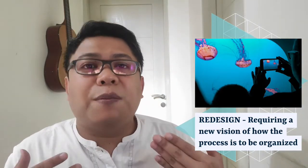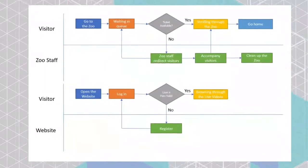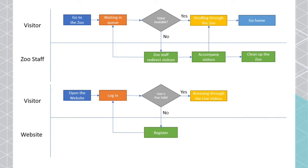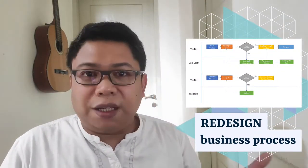The next category is redesign, which requires a new vision of how the process is to be organized. For example, during the pandemic you can't go to the zoo, so instead you watch it on a smartphone via live video. In the current system, you go to the zoo, wait in line, check ticket availability, stroll through with zoo staff accompanying you, then go home. With a redesigned process, you log in to the website, browse live videos, and no zoo staff are needed to guide you — the business process is fundamentally changed.